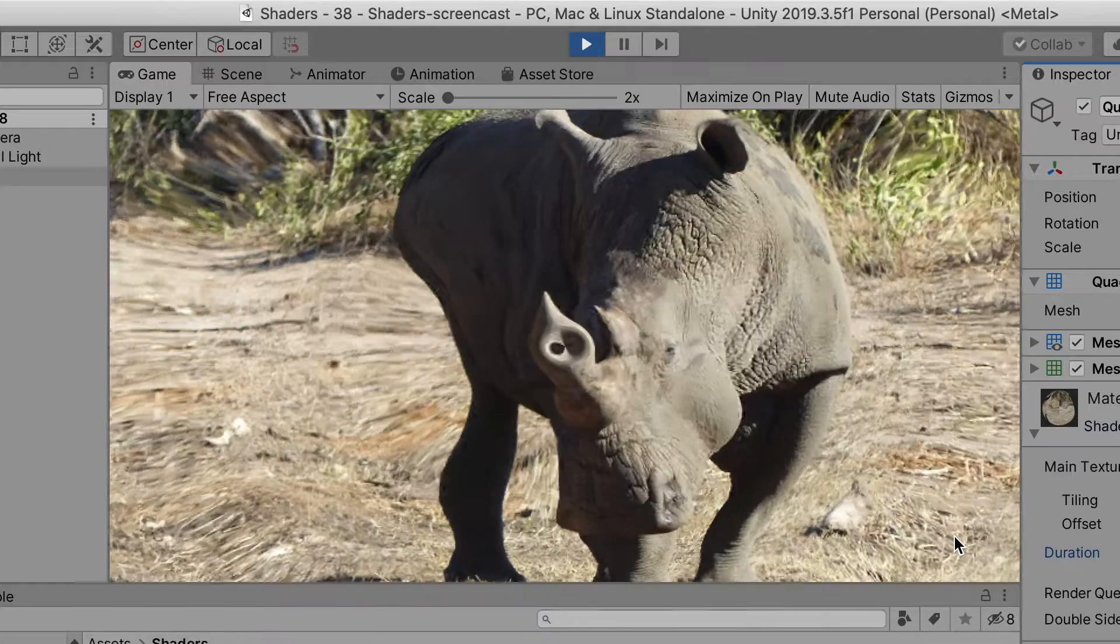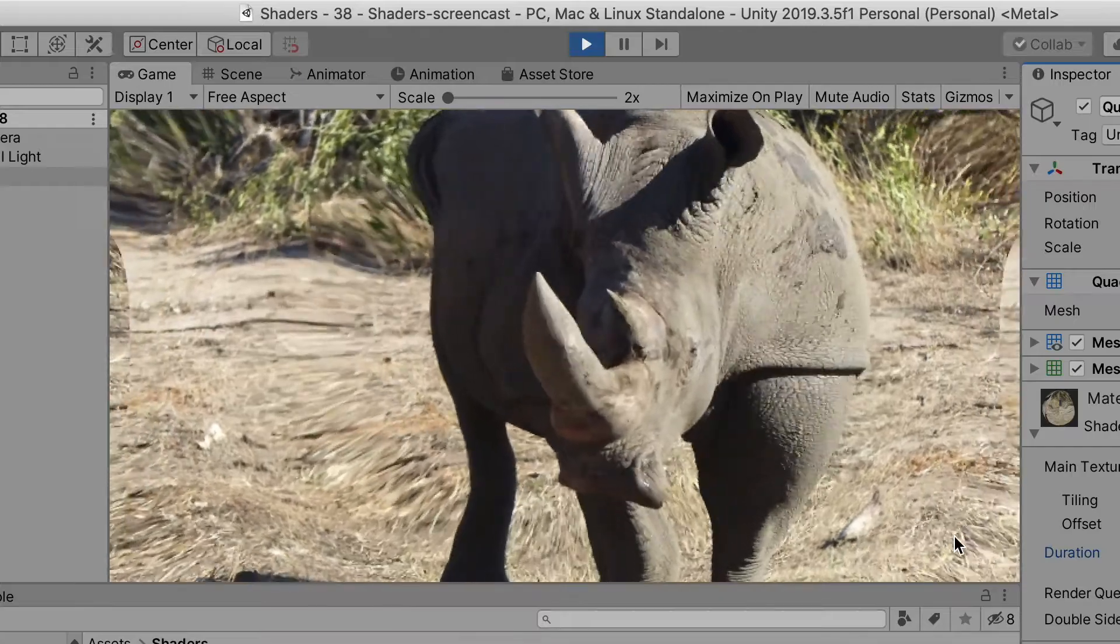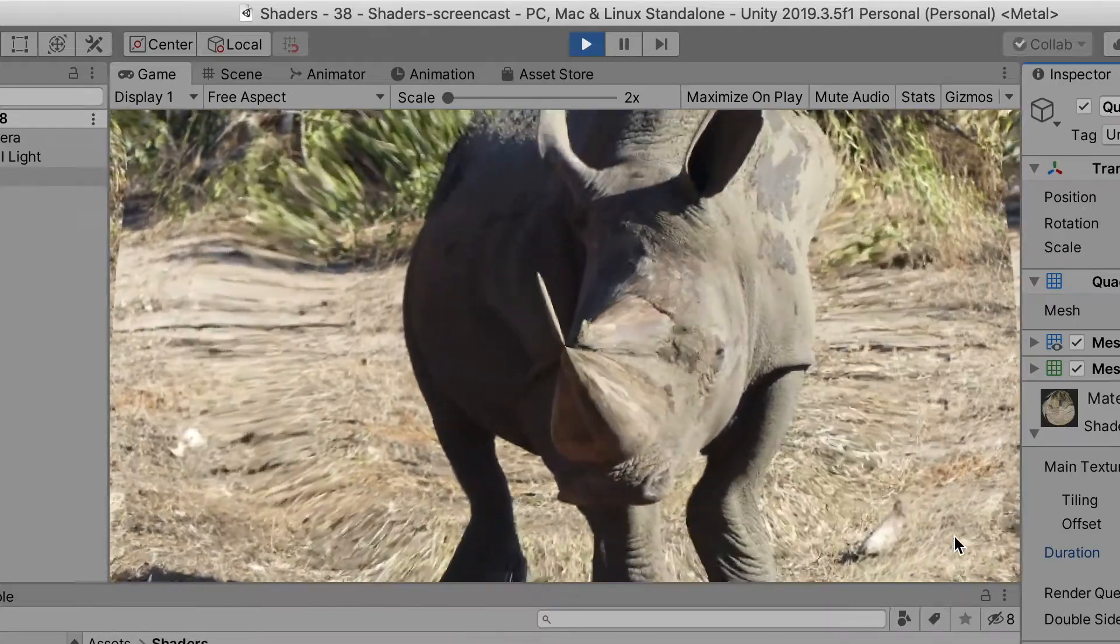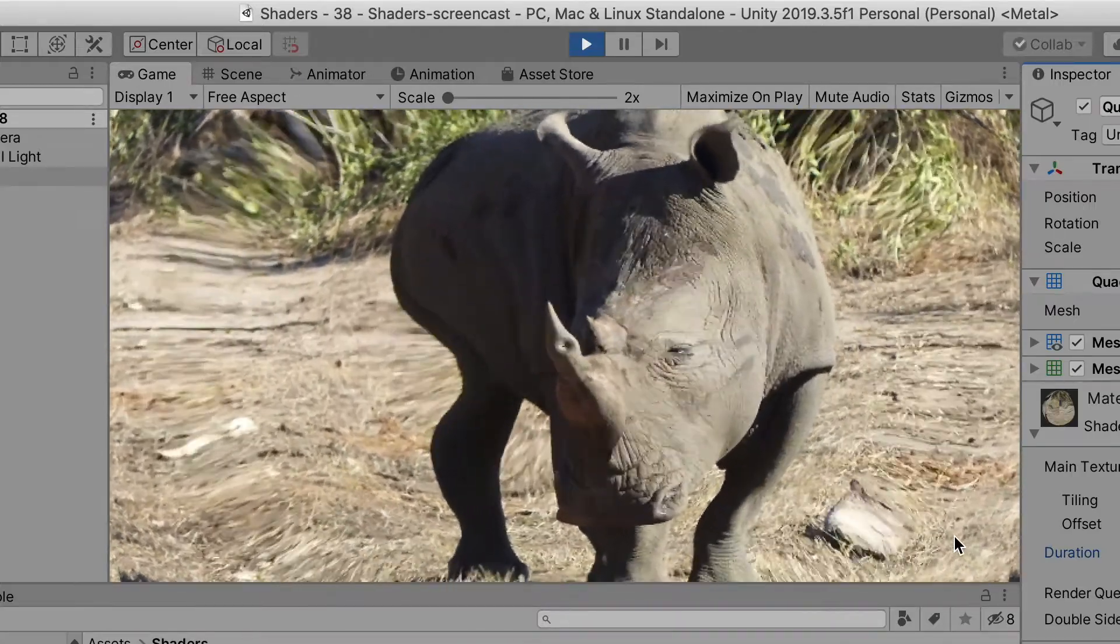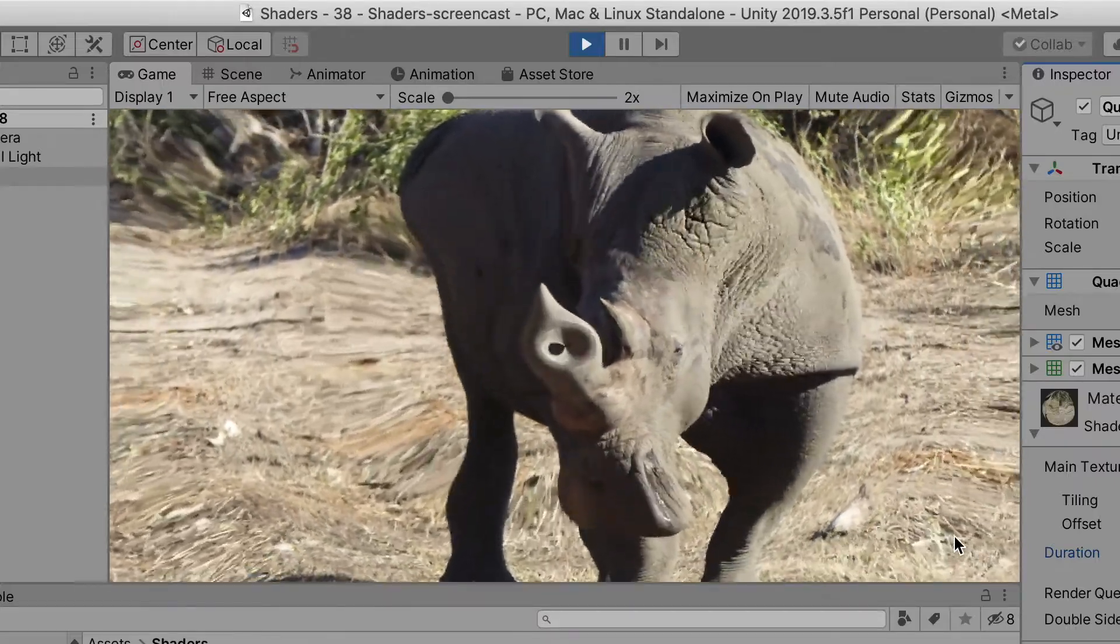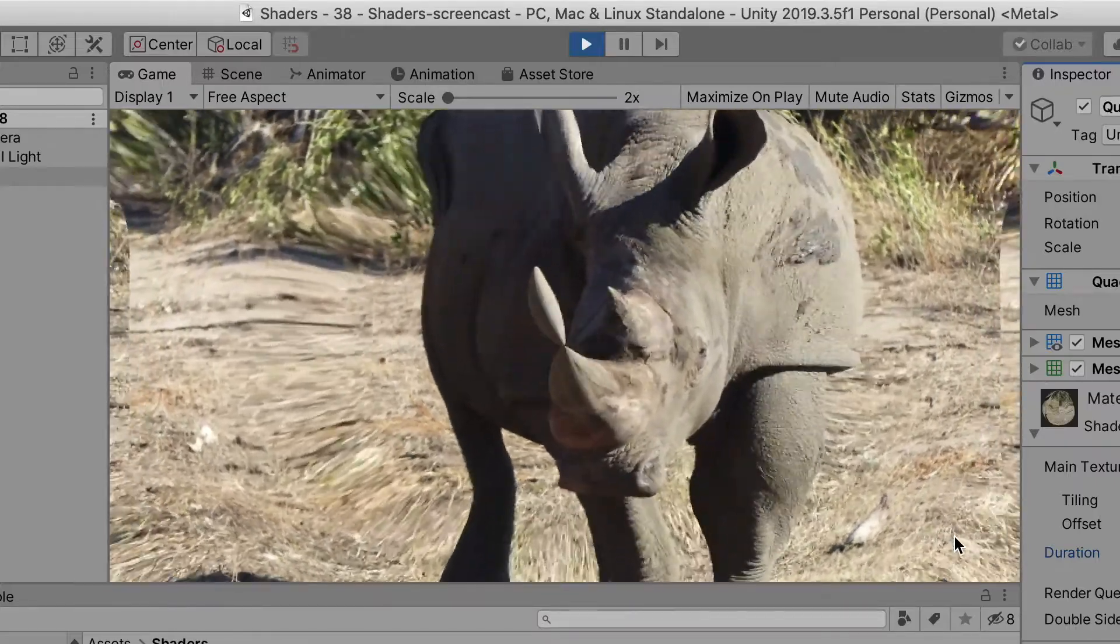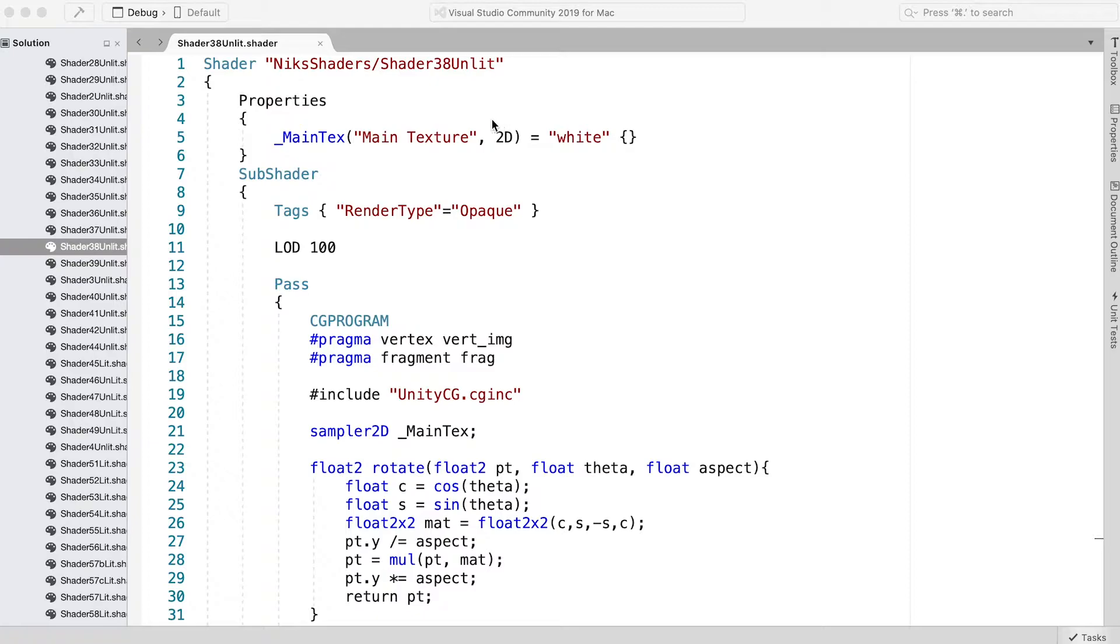To ripple the image in this shader, we're going to play around with which texel to select from a texture image to give the appearance of a ripple. Don't worry, it's surprisingly easy. First, let's add a new property.